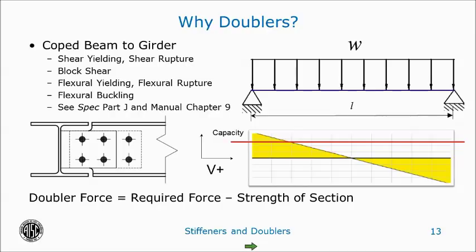A coat beam is really easy to see what's going on and why a doubler might be required. You have a section, you have a coat in it, you lose area. You check the coat section for all the applicable limit states — shear yielding, shear rupture, block shear, flexural yielding, and flexural buckling. Whatever the coat section can't resist, the balance of the force is resisted by the doubler. Simply design the doubler to resist the balance of the force. It's fairly straightforward.